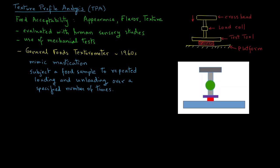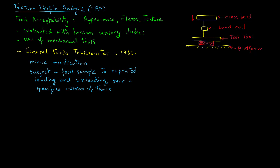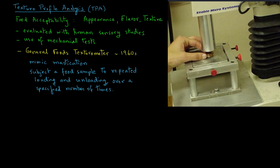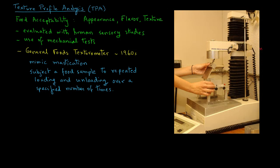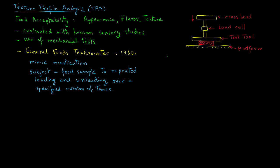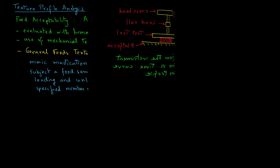As we see in this short video, a food sample is subjected to repeated loading and unloading. Using the basic concept of the universal testing machine, there are many manufacturers who currently make these texturometers. For example, this device where a piece of hamburger meat is subjected to different loading and unloading conditions. The response from this instrument is in terms of force versus time or distance.